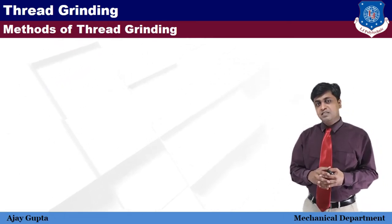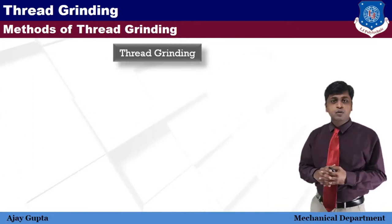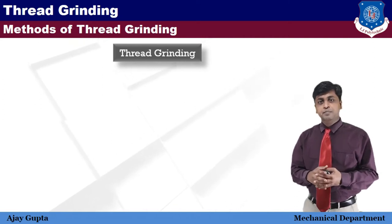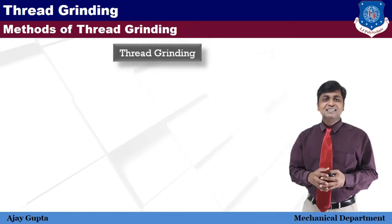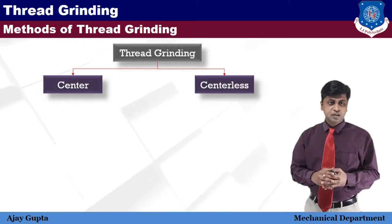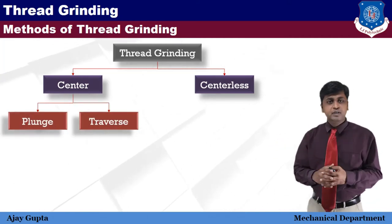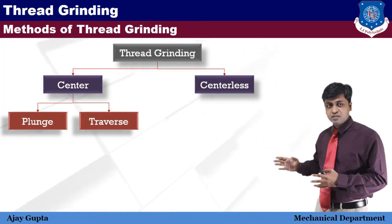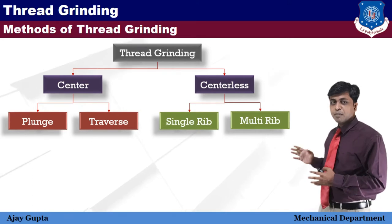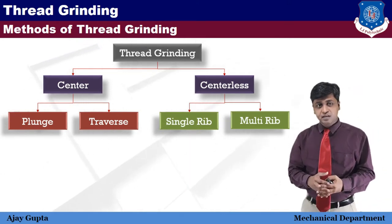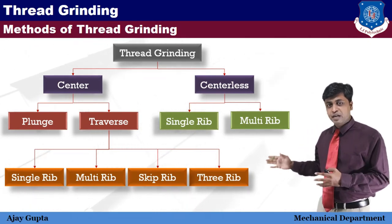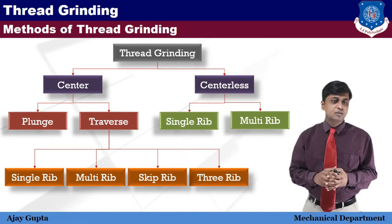The methods of thread grinding are classified as shown in the diagram, where the grinding wheel may be a single rib or multi-rib cutter. Thread grinding is classified into two processes: the center process and the centerless process. The center process is further classified into two categories — plunge and transverse, also known as pass-over grinding. Traverse is further classified as single rib, multi-rib, skip rib, and three-rib thread grinding. The centerless process uses either single rib or multi-rib wheels.